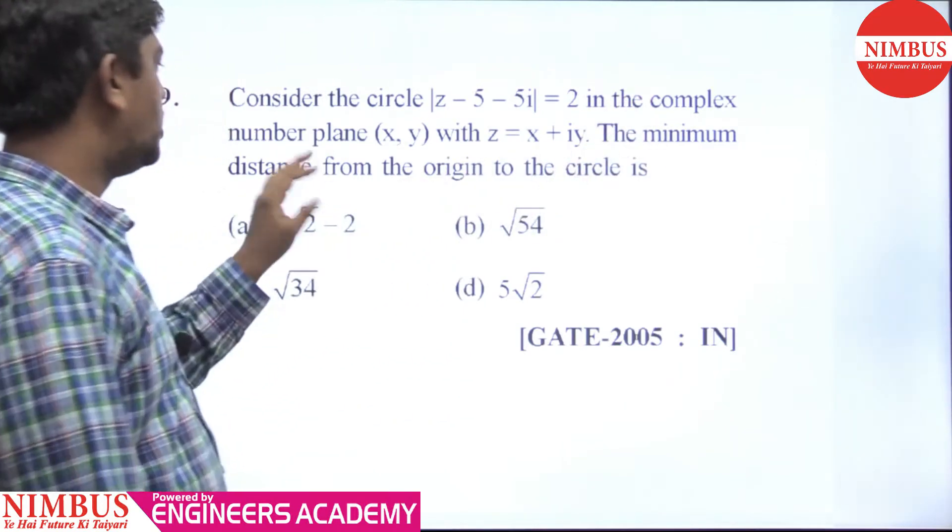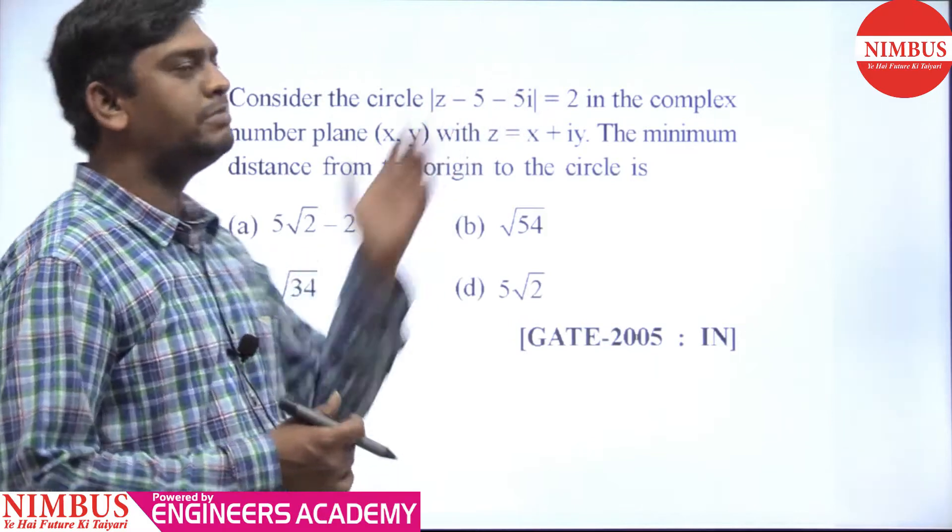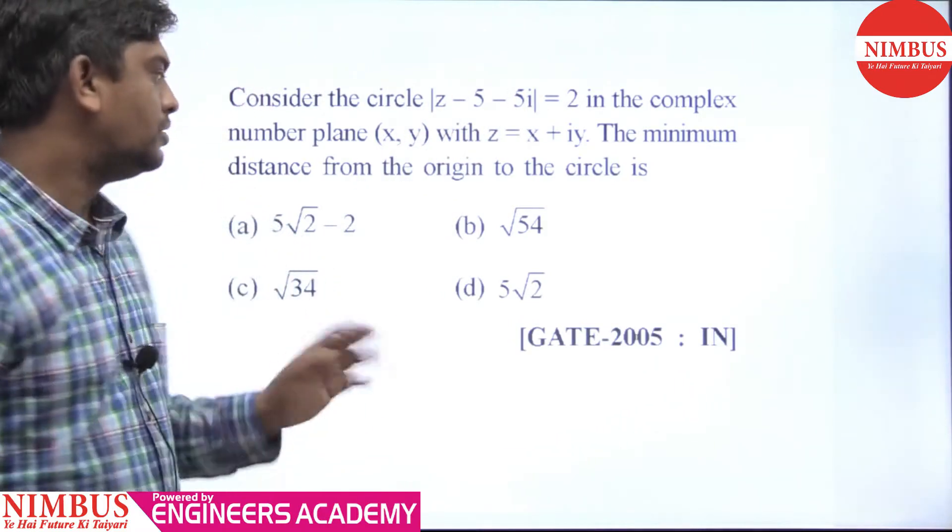The minimum distance from the origin to the circle is. Let us see the solution.